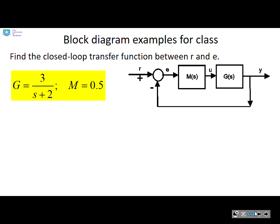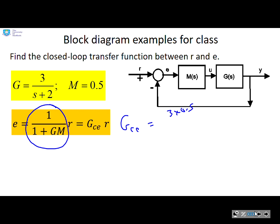Next example. Find the closed loop transfer function between r and e. So this was the expression we're interested in. The closed loop transfer function is given by 1 over 1 plus gm. So I can write gc equals 3 times 0.5 over s plus 2 over 1 plus, and I'll just do the multiplication, 1.5 over s plus 2. And again, if I multiply through by the denominator, I get 1.5.